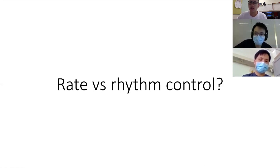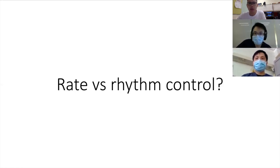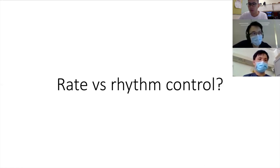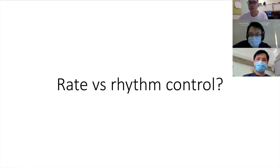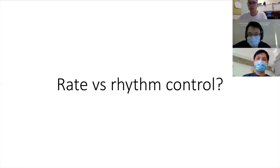The general principle is to treat the underlying cause, and unless the patient is very symptomatic, it's usually rate control. The typical patient who gets rhythm control is younger with paroxysmal AF, very symptomatic when AF comes on, otherwise well, and without many comorbidities. We also look at how much the heart has remodeled — if the atrium is very large, AF is likely to recur after cardioversion, so rate control may be the better strategy.